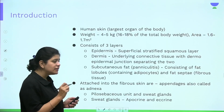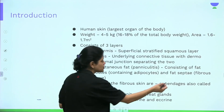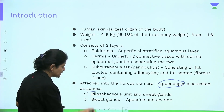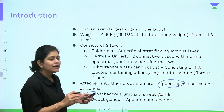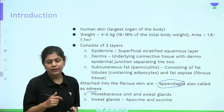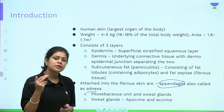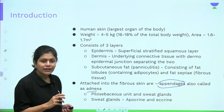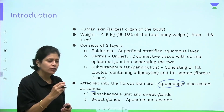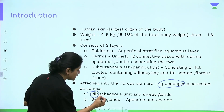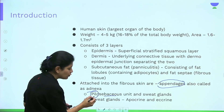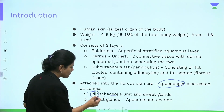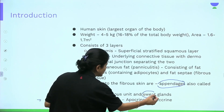Attached within the skin are structures called appendages, also known as adnexa. These include the hair follicle, sweat gland, sebaceous gland, and erector pili muscle. The sebaceous gland drains into the hair follicle, which is why it is called the pilosebaceous unit — 'pilo' meaning hair and 'sebaceous' referring to the sebaceous gland.